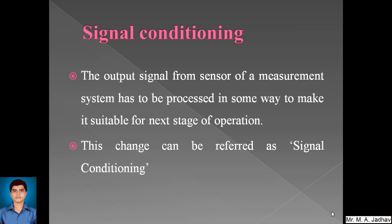Signal conditioning: the output signal from the sensor of a measurement system has to be processed in some way to make it suitable for the next stage of operation. This change can be referred to as signal conditioning. For example, the output from a thermocouple is a very small voltage which cannot be read by a microcontroller. A signal conditioning module might be used to convert this into a suitable current signal, or to provide noise rejection and cold junction compensation. The output from the thermocouple, which is in the range of a few millivolts, is converted to a few volts using amplification.